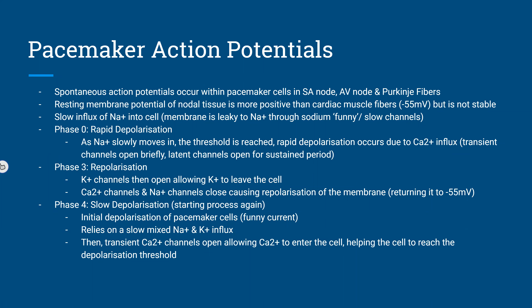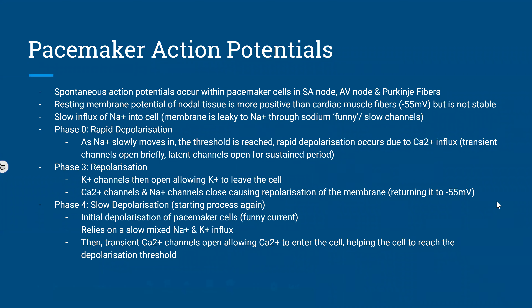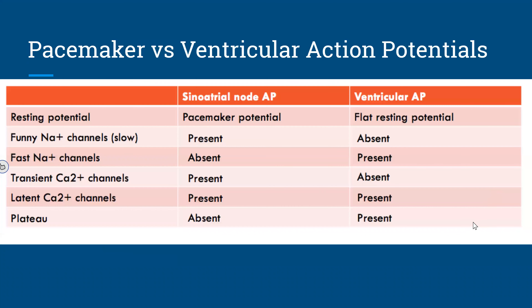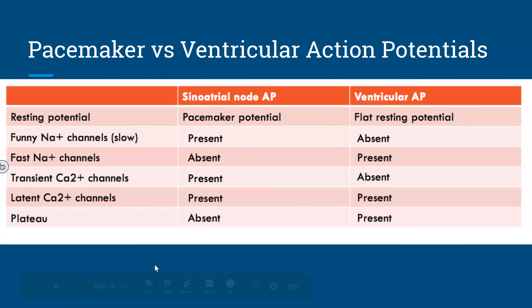Then there is a slow phase-four depolarization as the cycle starts again — this is why the pacemaker sets its own current and why the heart can function in isolation. This is well illustrated by a train analogy. A comparison of pacemaker versus ventricular action potentials is a good study tool.